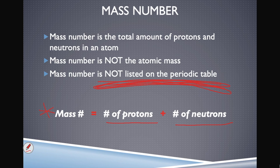Subatomic particles — protons, neutrons, electrons — only come in whole numbers. It's not like hydrogen has one proton and 0.01 of a neutron. Atomic mass and mass number are not the same thing. Mass number is determined by doing math: protons plus neutrons. Atomic mass is given on the periodic table and is a topic for another day.